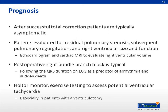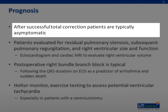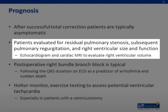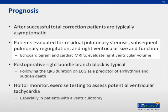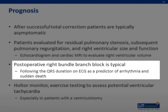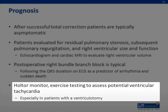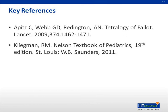The prognosis of patients with Tetralogy of Fallot depends upon several factors but is typically good. After successful total correction, patients are typically asymptomatic. Patients are evaluated for the rest of their life for residual pulmonary stenosis, subsequent pulmonary regurgitation, and right ventricular size and function. Echocardiogram and cardiac MRI are utilized to evaluate right ventricular volume and guide when replacement of the right ventricular outflow tract is needed. Postoperative right bundle branch block is typical, and following QRS duration on ECG is important, as it is a predictor of arrhythmia and sudden death. Holter monitor and exercise testing to assess potential ventricular tachycardia are used, especially in patients with a history of ventriculotomy.